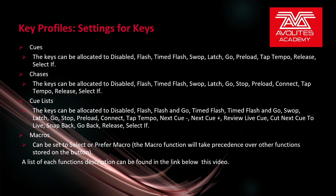Here we can go through what each key can be set to do depending on what type of item the key is connected to — whether it be a cue, a chase, a cue list, or a macro. If it's a cue, the key can be set to: allocated, disabled, flash, timed flash, swap, latch, go, preload, tap tempo, release, or select if. Disabled means the key does nothing. Flash will bring the playback on while held, and release it when you let go.